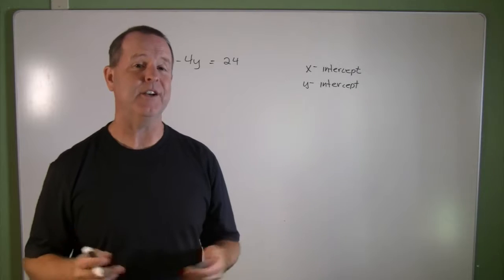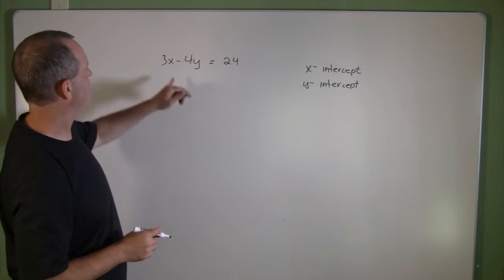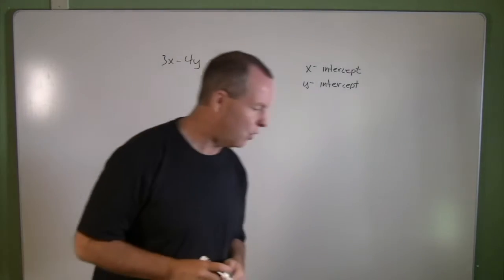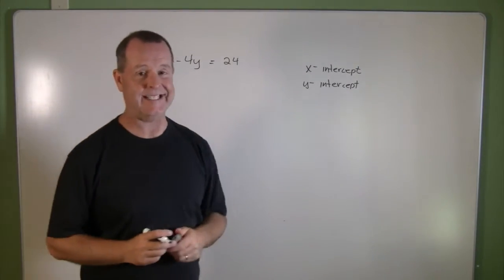Let's find the x-intercept and y-intercept of an equation. The equation we're going to choose is 3x minus 4y equals 24, and I want to find out what its x-intercept is.